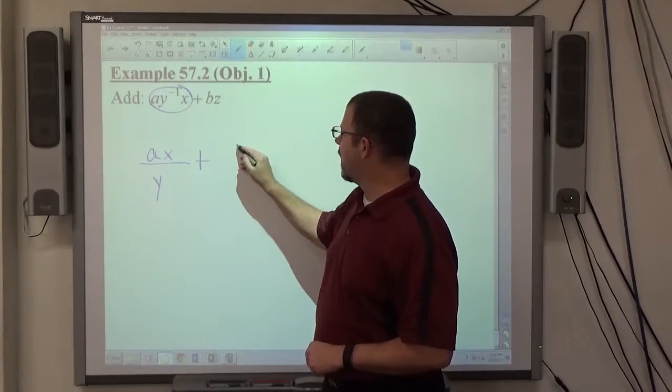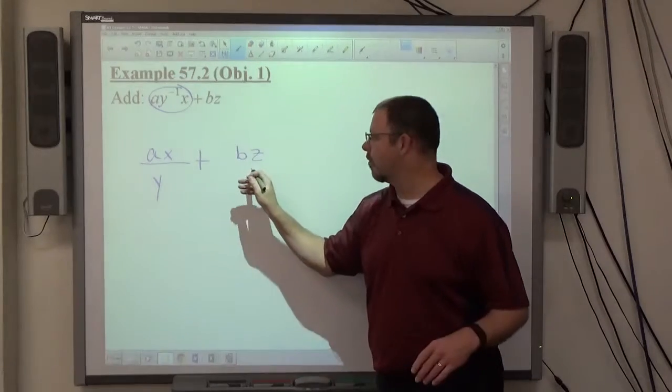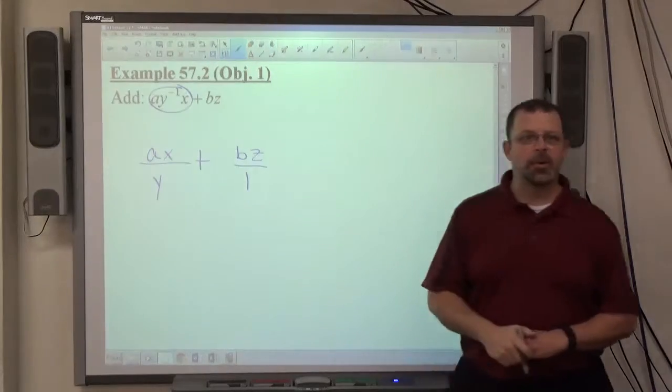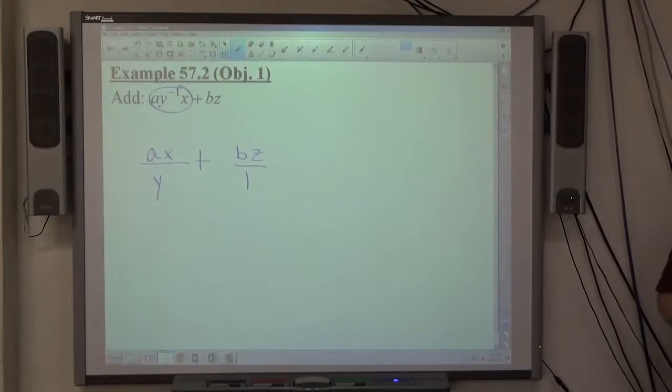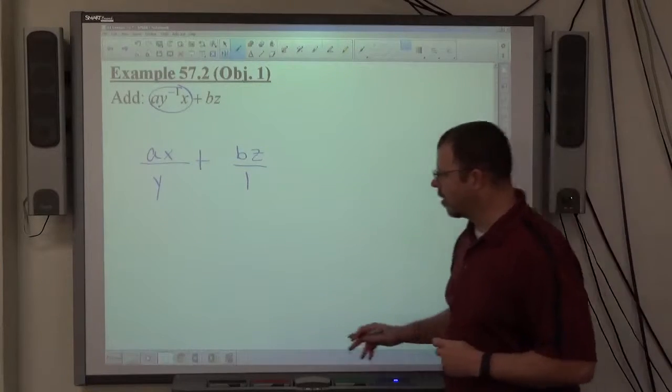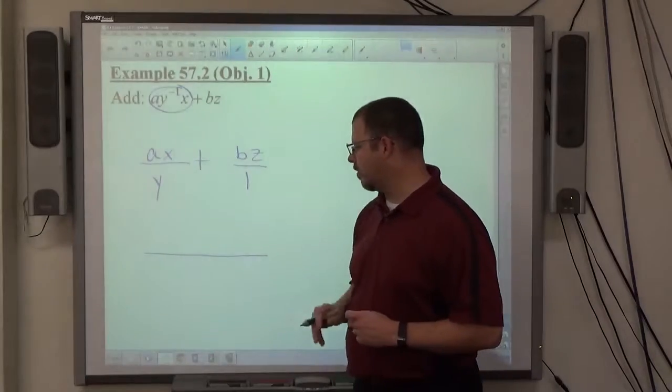To the right of the plus sign, I have a B, Z with no denominator whatsoever. Again, I can put an over one to make it look like a fraction. That's legal to do that. Just know that if you put it over one, it has no bearing on the least common denominator.